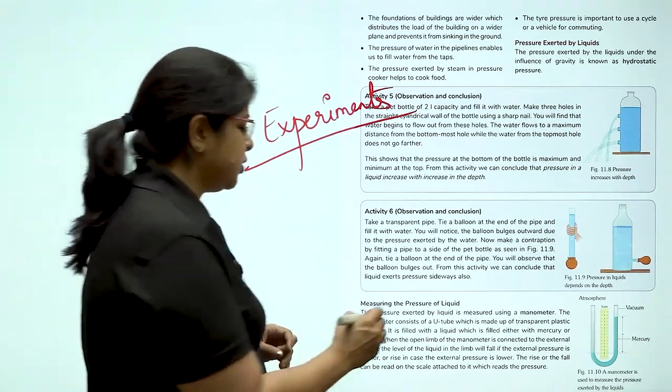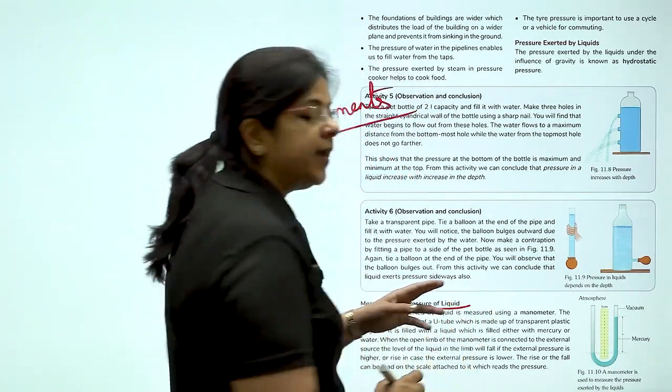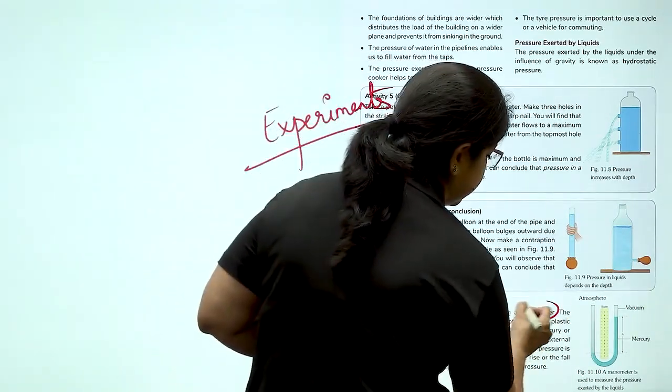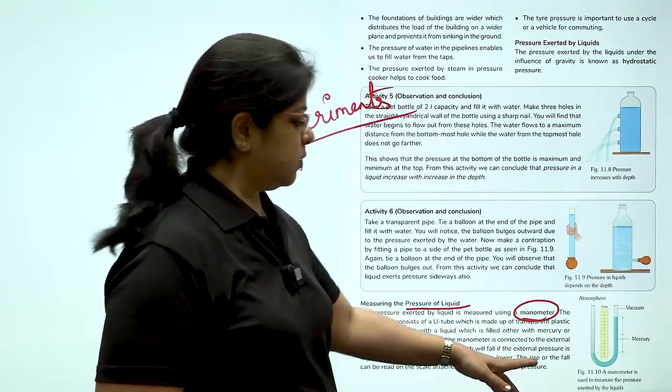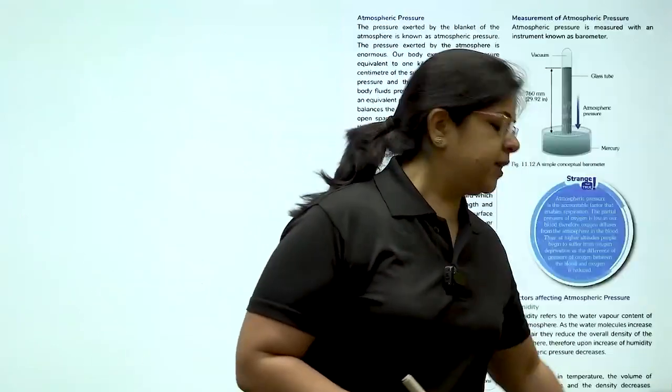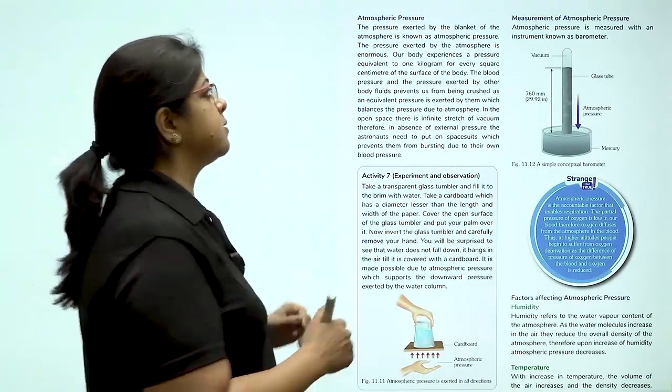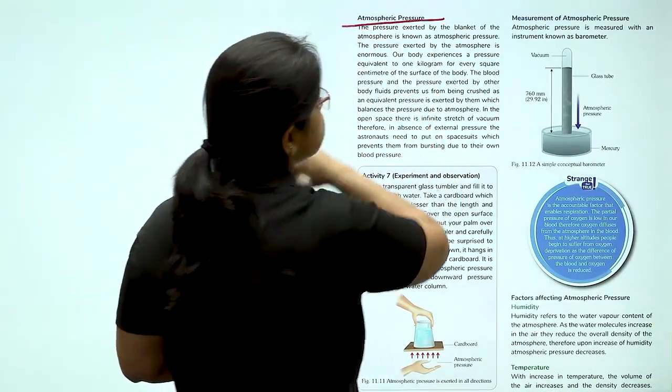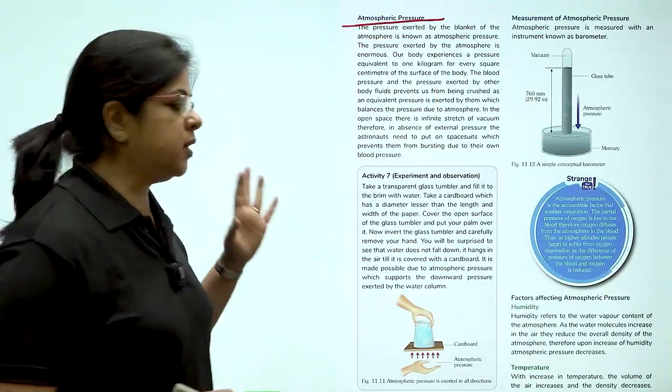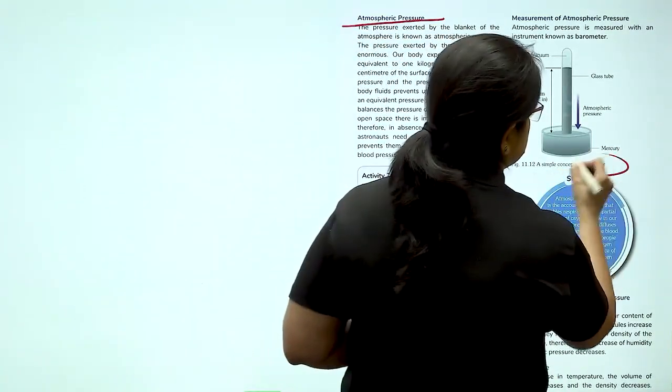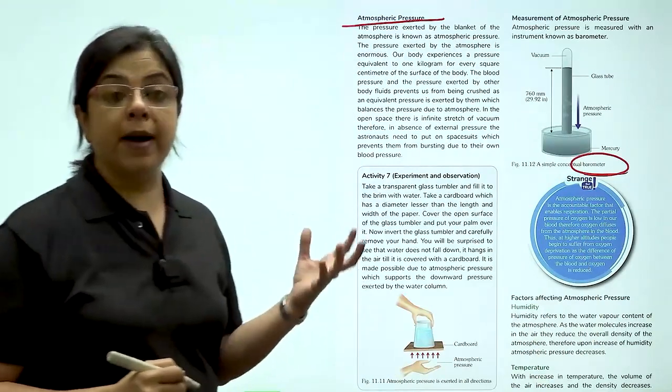So, how do you measure pressure by the liquid? It is measured by using a manometer, which you can see in the picture also here. The atmosphere around us also exerts pressure, which is known as atmospheric pressure. And this pressure is measured using a barometer.